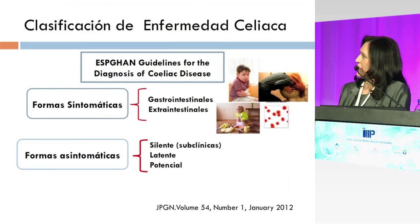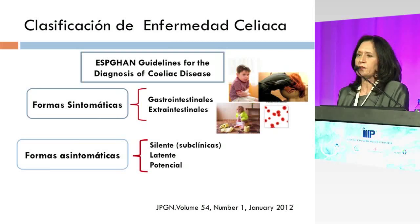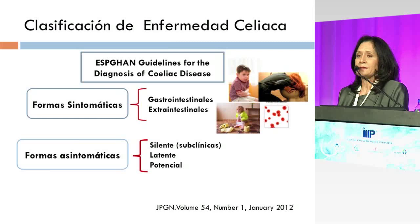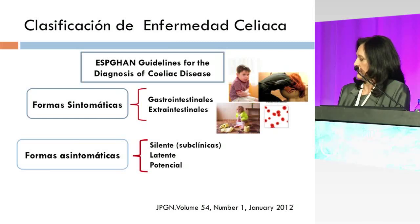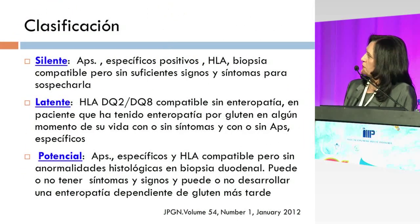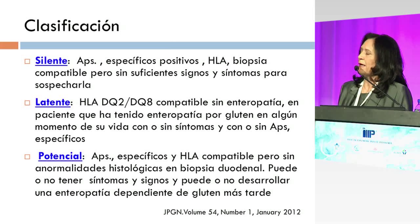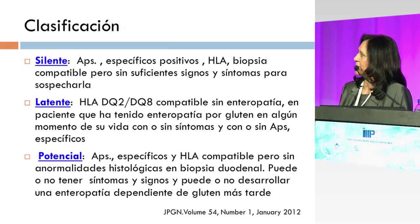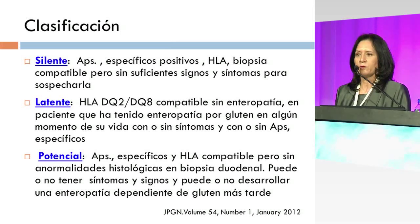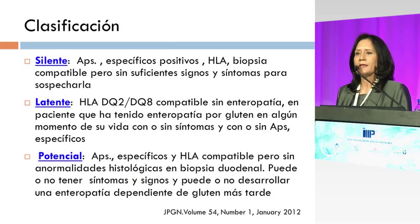La clasificación de la ESPGHAN en relación a las formas en las que se puede presentar la enfermedad incluye las formas sintomáticas con síntomas gastrointestinales como diarrea, vómito, distensión abdominal, o extraintestinales como talla baja y anemia de difícil control. Las formas asintomáticas se dividen como silentes, latentes y potenciales. La forma silente comparte anticuerpos específicos positivos y HLA con biopsia compatible pero sin signos suficientes para sospecharla. La latente tiene DQ2 o DQ8 compatible pero sin enteropatía en un paciente que ya previamente la había tenido. La potencial tiene anticuerpos específicos y HLA compatibles pero no hay anormalidades en la biopsia intestinal, aunque posteriormente puede desarrollar una enteropatía.